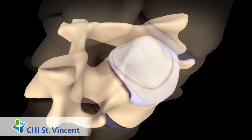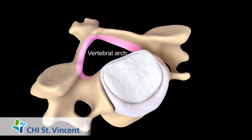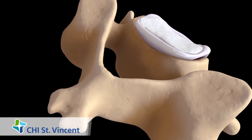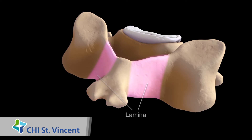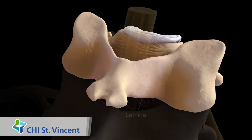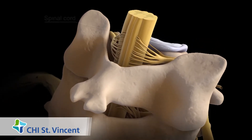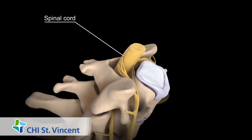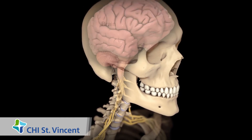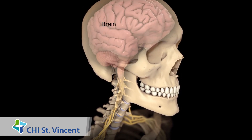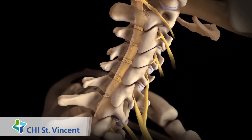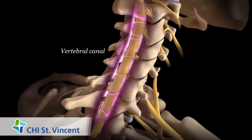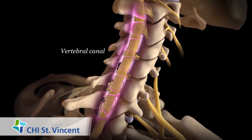The back part of each vertebra has a curved section called the vertebral arch. Except for the first vertebra, each vertebral arch has a bony projection called the spinous process. On each side of the spinous process is a flat piece of bone called a lamina. The vertebral arch surrounds and protects your spinal cord, a column of nervous tissue connecting your brain to other nerves in your body. Your spinal cord passes through an enclosed space called the vertebral canal, which is formed by the vertebral arches of your vertebrae.